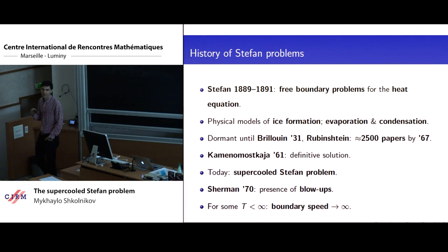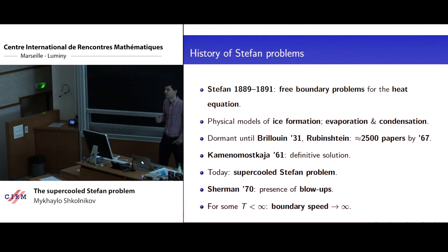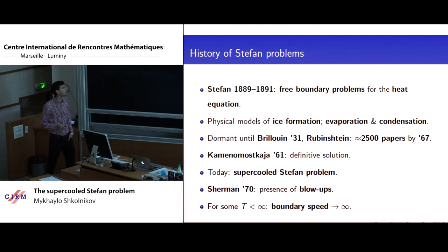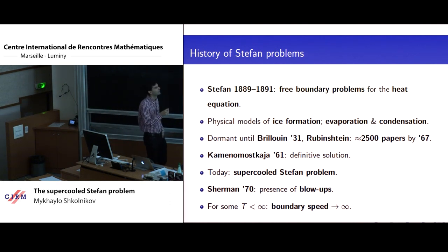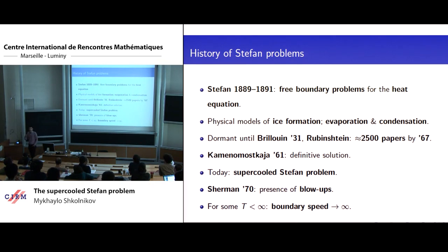As it sometimes happens in science, his work was thoroughly forgotten and barely cited for 40 years, until Brillo gave a talk about it at the Institut Henri Poincaré in Paris in 1931, and then somehow the subject went through the roof. If you look at the book by Rubinstein from 1967 on Stefan problems, he says that even the book is not long enough to cite all the papers written on the subject, and estimates that there are around 2,500 papers written on Stefan problems by the 1960s.